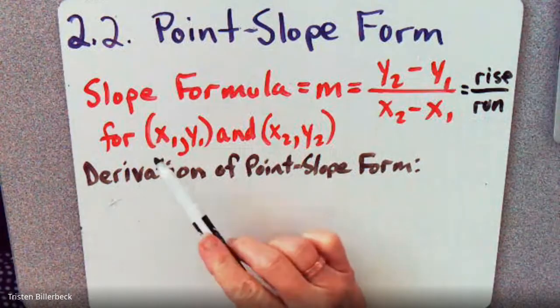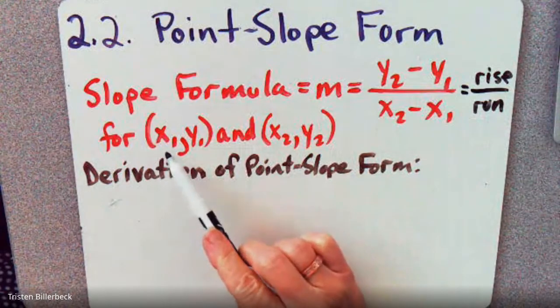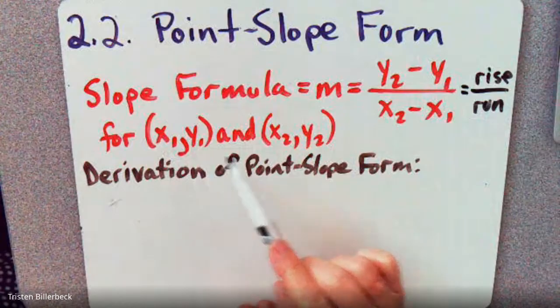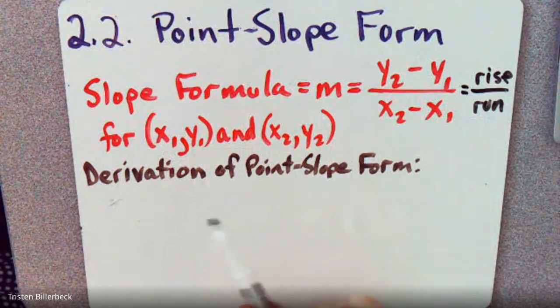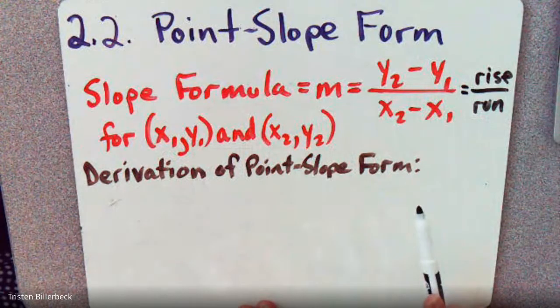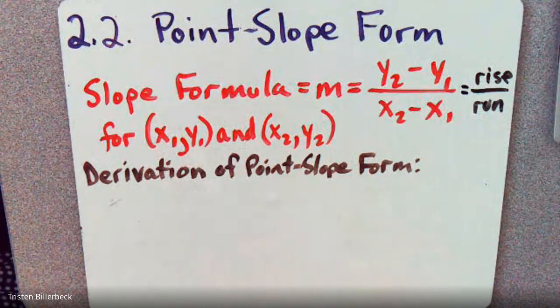And that's for point X1, Y1 and X2, Y2. Now to derive the Point-Slope Form, we need to understand the slope formula.